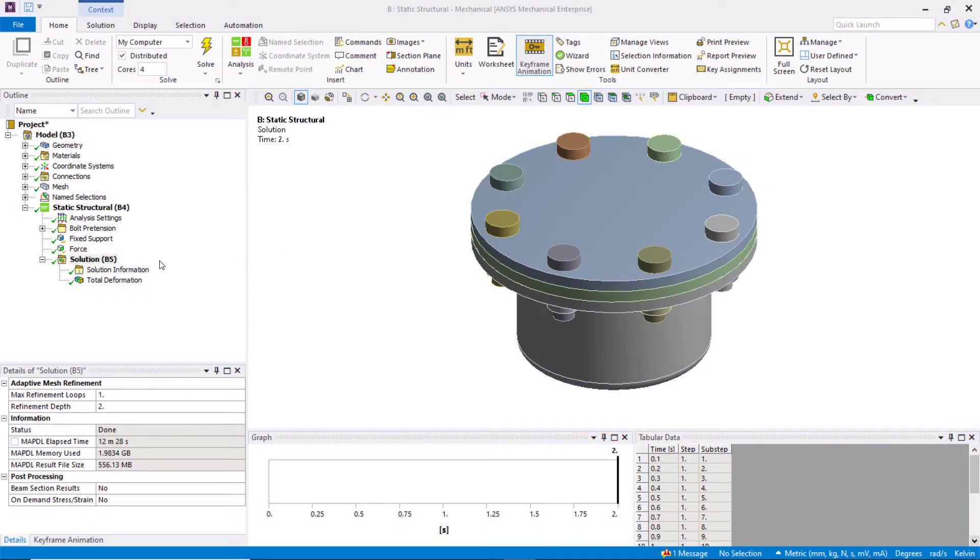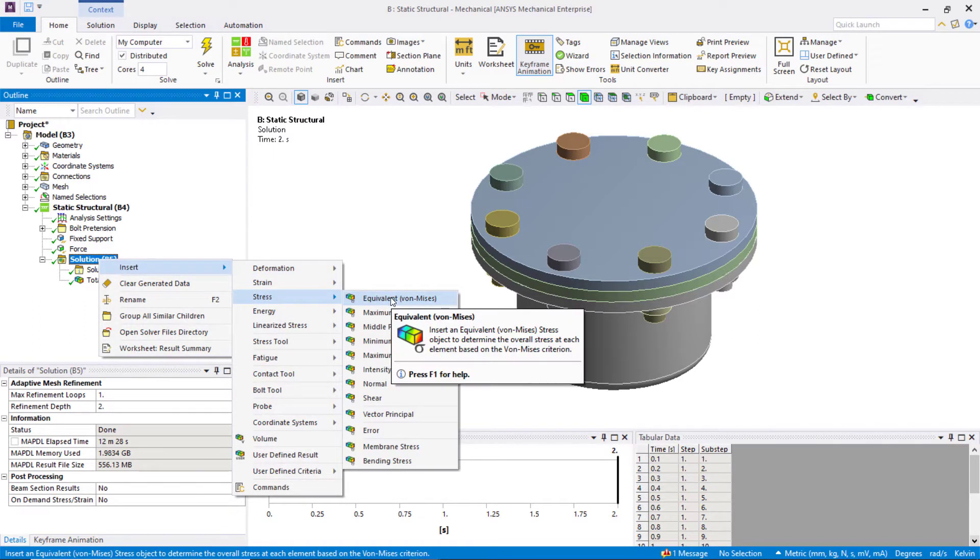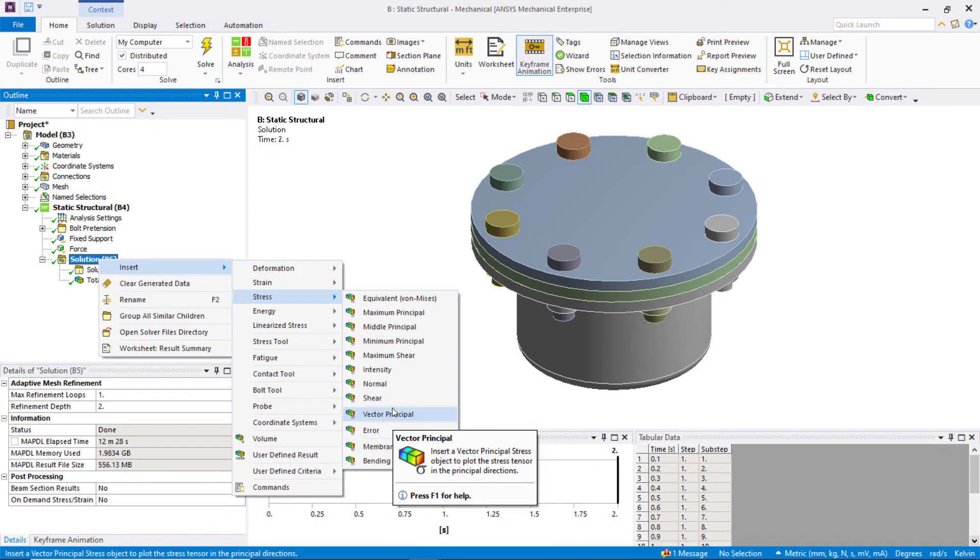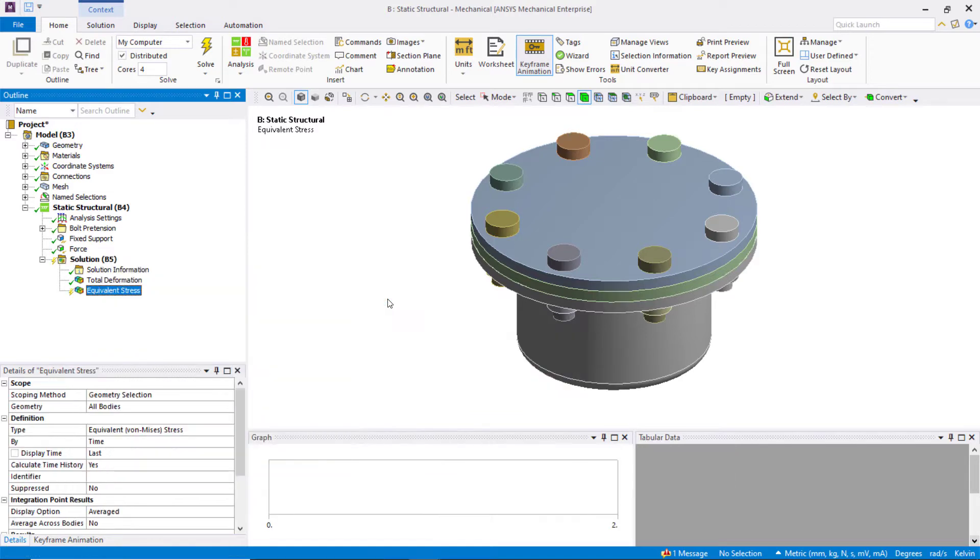It's pretty straightforward to extract stresses in solid bodies in ANSYS Mechanical. After the solution is completed, right click on Solution, go to Stress and insert the metric of stress that you are looking for. You may choose between equivalent stresses or individual normal and shear components or even principal stresses. The same applies to strains as well.